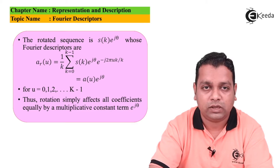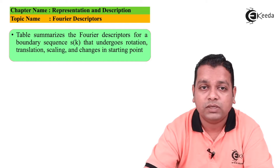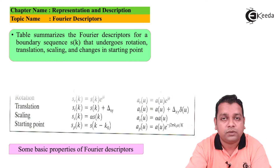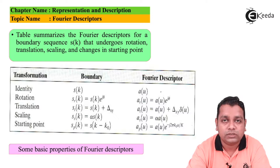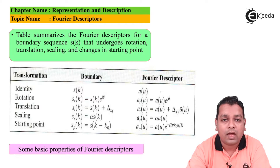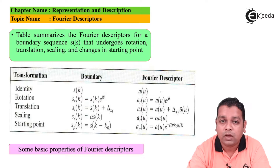The first column of the table is titled 'Transformation', listing identity, rotation, translation, scaling, and starting point cases. The second column describes the corresponding boundary sequence: s(k) for identity; s_r(k) = s(k)·e^{jθ} for rotation; s_t(k) = s(k) + Δ_{xy} for translation.